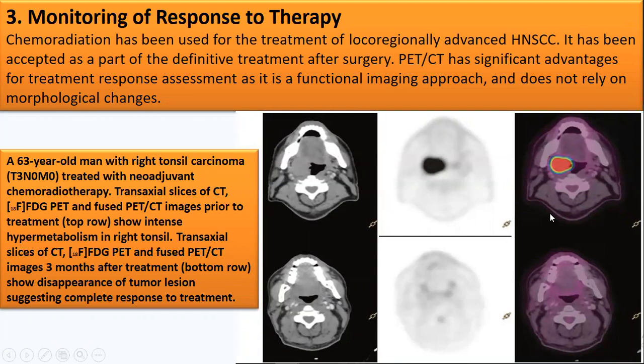The third indication is monitoring of response to therapy. Chemoradiation has been used to treat locally regional advanced head and neck squamous cell carcinoma, and has been accepted as part of definitive treatment after surgery. FDG PET-CT has significant advantage for treatment response assessment as a functional imaging approach and does not rely on morphological imaging. This is a patient, a 63-year-old man with right tonsil carcinoma, T3N0M0, treated with neoadjuvant chemoradiotherapy.